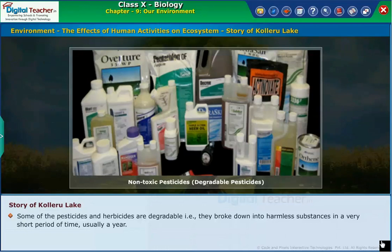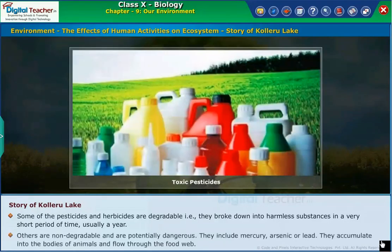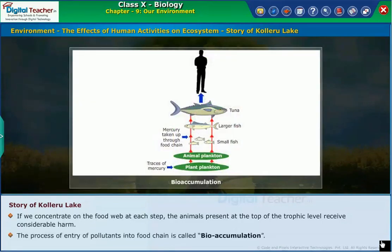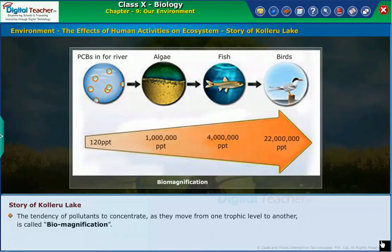Some pesticides and herbicides are degradable — that is, they break down into harmless substances in a very short period of time, usually a year. Others are non-degradable and potentially dangerous; they include mercury, arsenic and lead. They accumulate in the bodies of animals and flow through the food web. If we concentrate on the food web at each step, the animals at the top trophic level receive considerable harm. The process of entry of pollutants into a food chain is called bioaccumulation. The tendency of pollutants to concentrate as they move from one trophic level to another is called biomagnification.